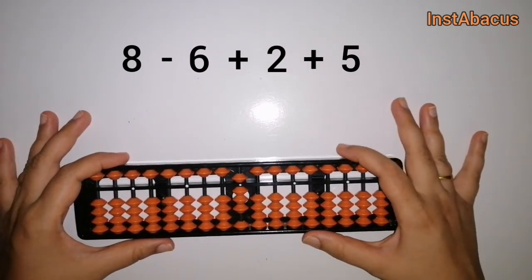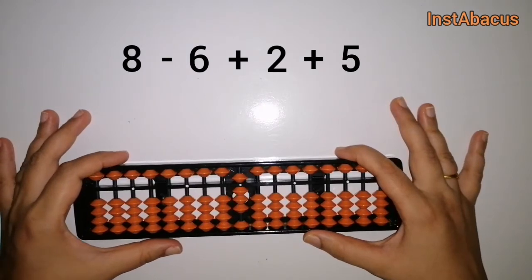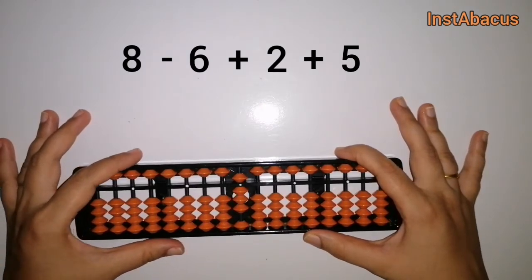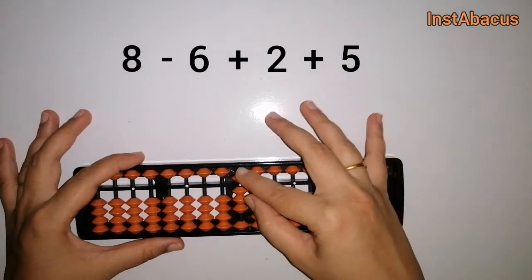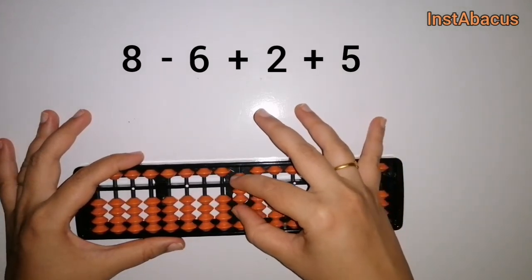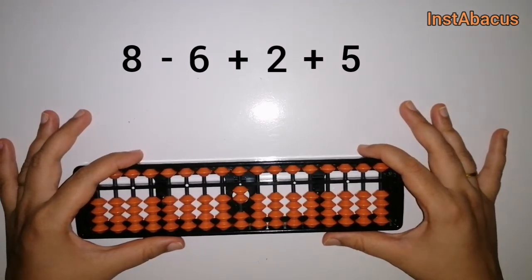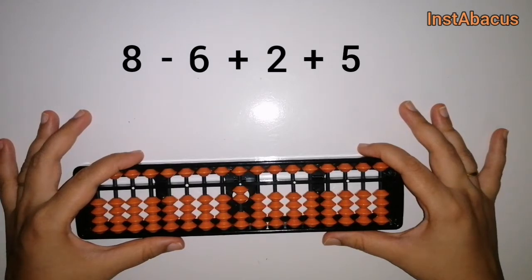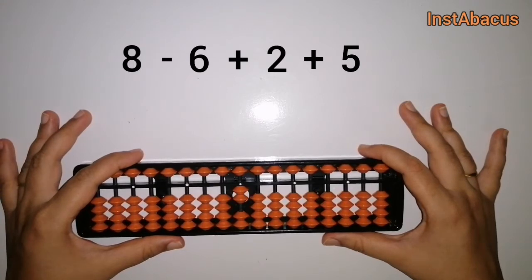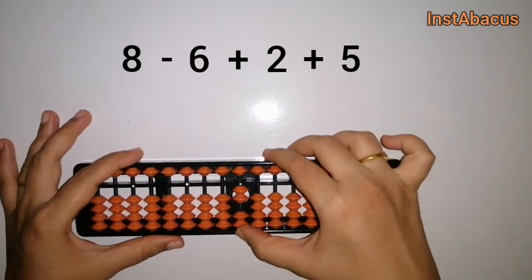This is eight on our abacus. Right now we are going to subtract six from this, so one heavenly and one earthly bead will move away from the answering bar. Are you following me? Are you with me? Great, so eight minus six — we have done that — and now we are going to add two.